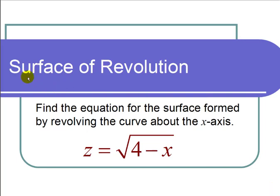This is a video on the surface of revolution. The question states, find the equation for the surface formed by revolving the curve about the x-axis. We have the curve z equals the square root of 4 minus x.